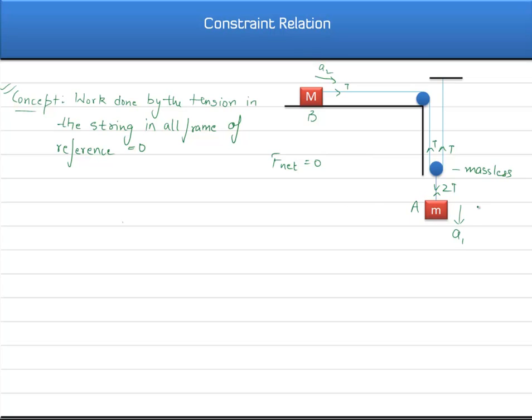Now let us assume this moves in the downward direction x1 and this moves simultaneously x2. It says that work done by the tension in the string - what is the work done by the tension? 2T was acting upwards, block A is moving downward, so the work done by the tension is minus 2T into x1 because work done is f dot x.